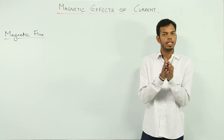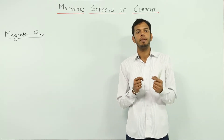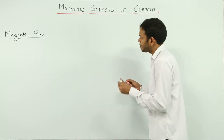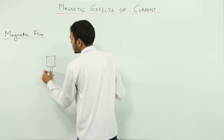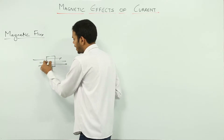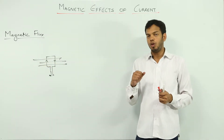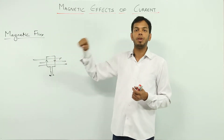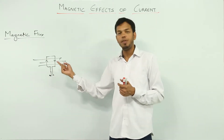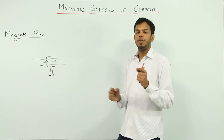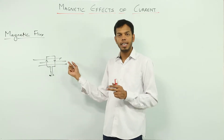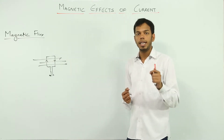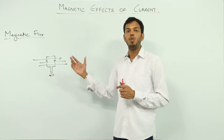We just completed the basic working principle behind a motor — that when a current-carrying coil is placed in a magnetic field, it experiences a torque. In a motor, a loop is provided with a magnetic field and current, causing it to rotate. My question is: what if we provide the magnetic field and rotate the loop ourselves? If we provide rotation and magnetic field, do we get current out? Yes, and that is the basic working principle behind a generator.